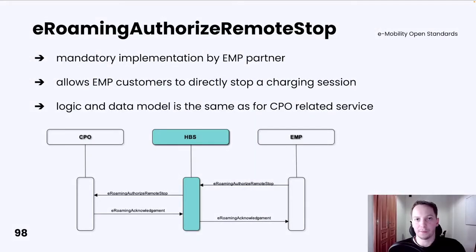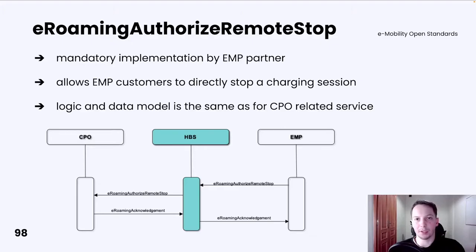The opposite operation is E-Roaming Authorize Remote Stop. It allows EMP customers to directly stop a charging session with, for example, a mobile application. Similar to E-Roaming Authorize Remote Start, implementation is mandatory for every EMP partner. The data model and logic are the same as for the CPO-related service.